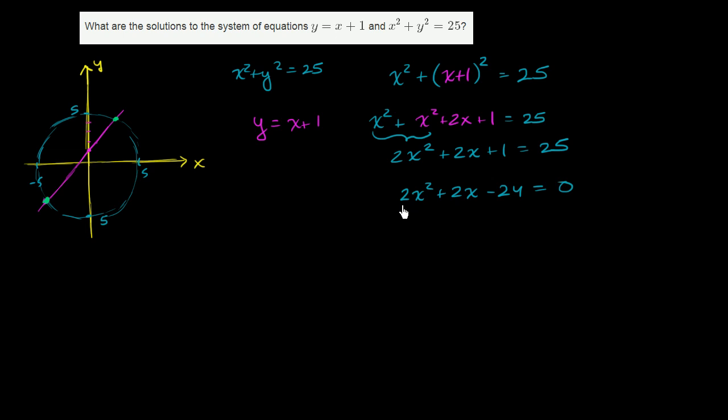And actually, just to simplify this, let's divide both sides by 2. And you get x squared plus x minus 12 is equal to 0.